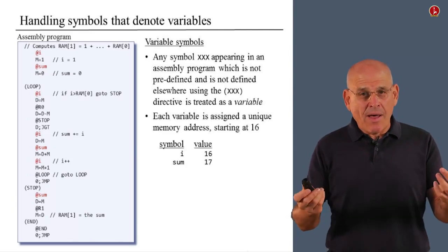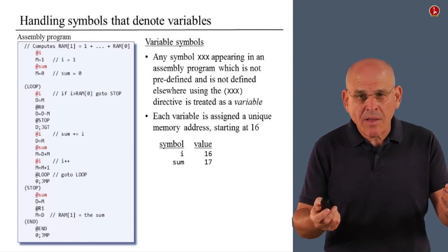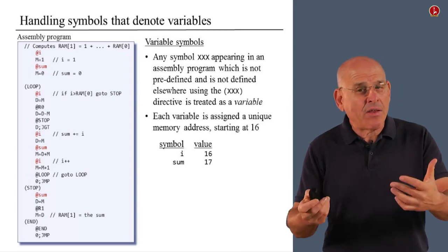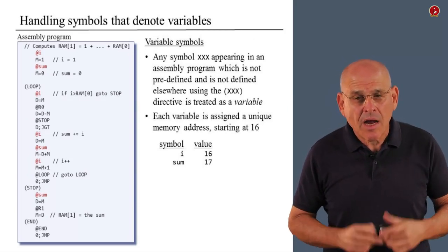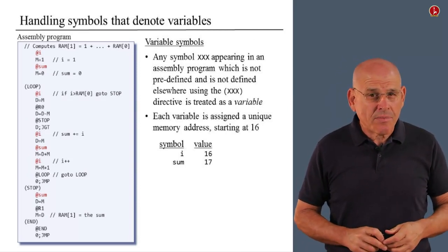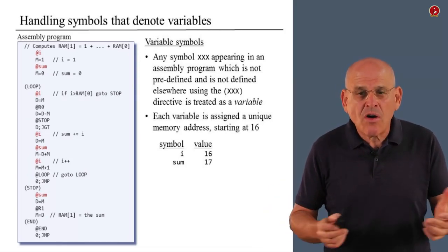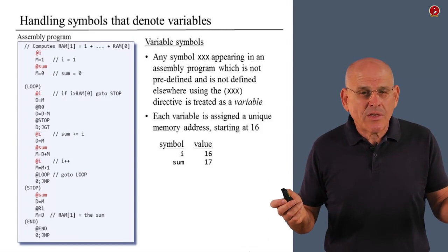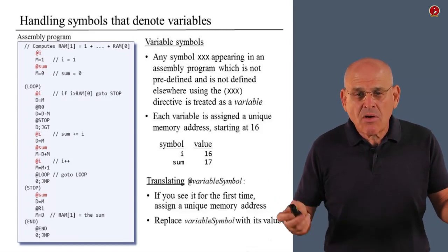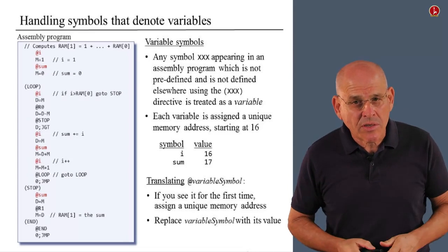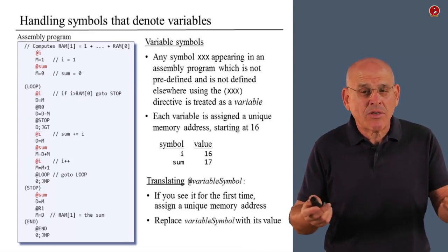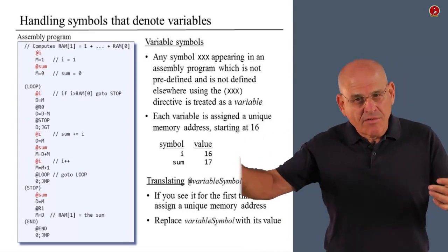All right, so with that in mind, we have only two variables in this program, I and sum. And the values of these variables are going to be 16 and 17. Now, like any other symbol in a hack program, the only context in which such symbol can come to play is in the context of an A instruction. So we may see instructions like at variable name. We definitely see them, because otherwise, why did we declare these variables to begin with?